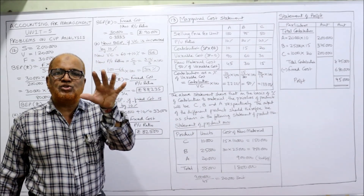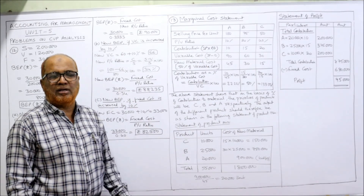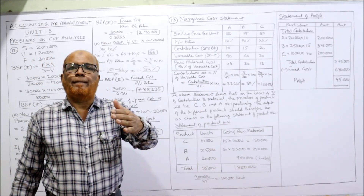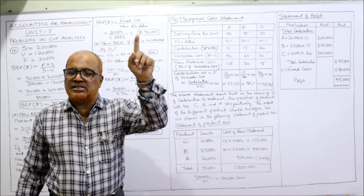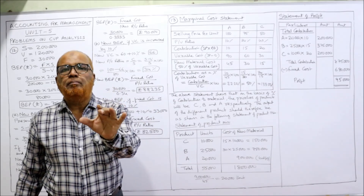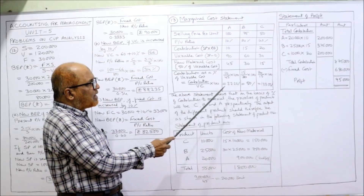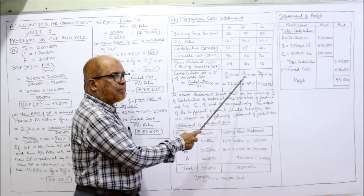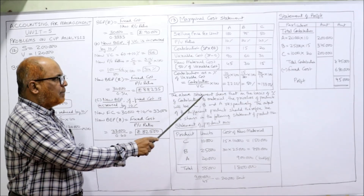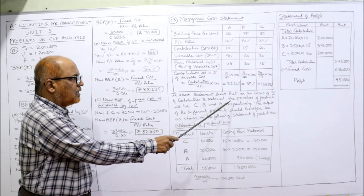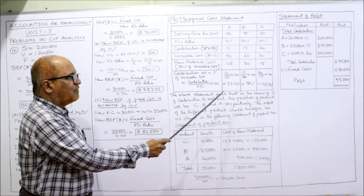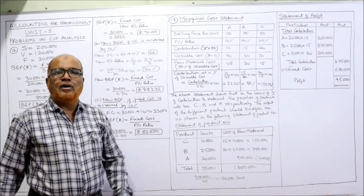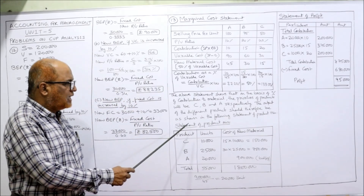The priority order based on contribution to raw material is: C first (133.33%), then B (50%), then A (22.22%). We produce C fully up to its maximum demand of 10,000 units, then B up to 25,000 units, and allocate the remaining raw material to A. The product mix should follow this preferential order to maximize profit.